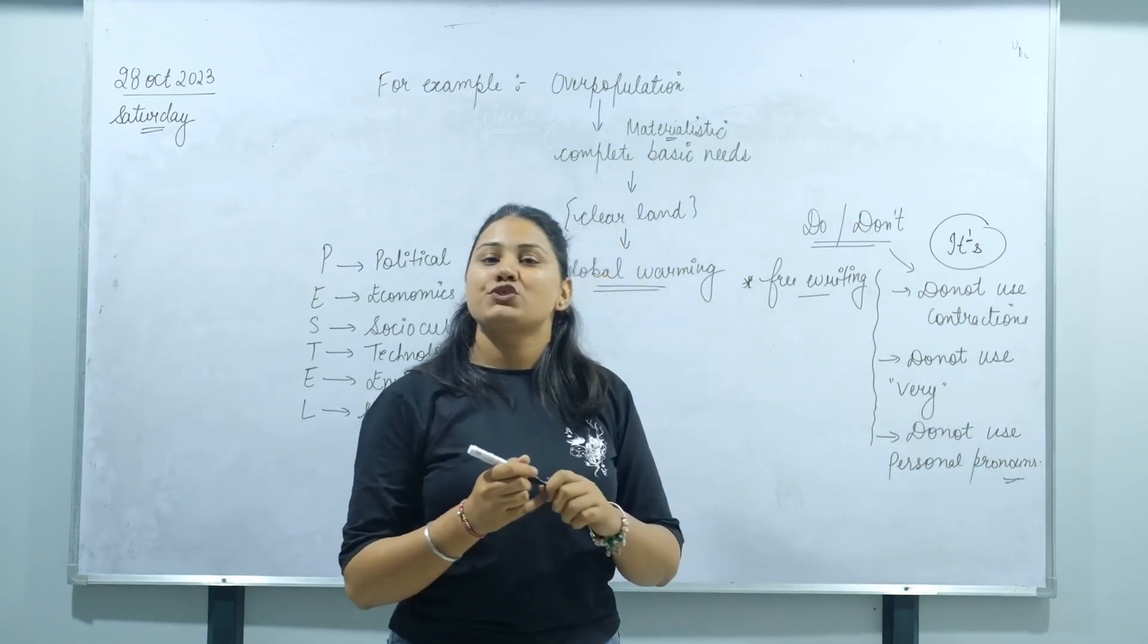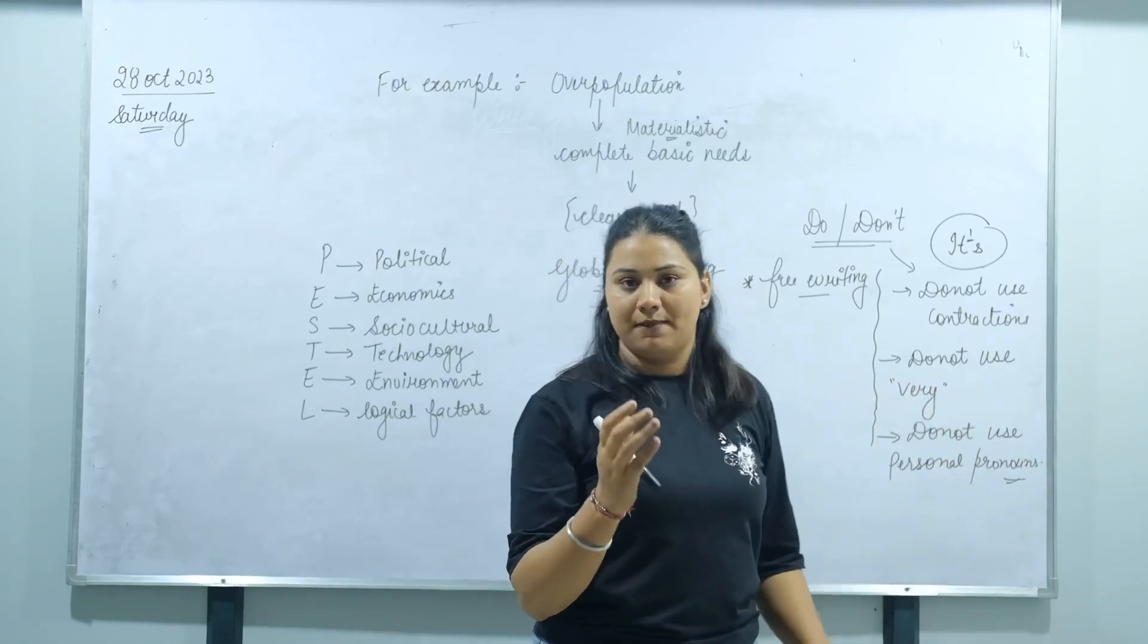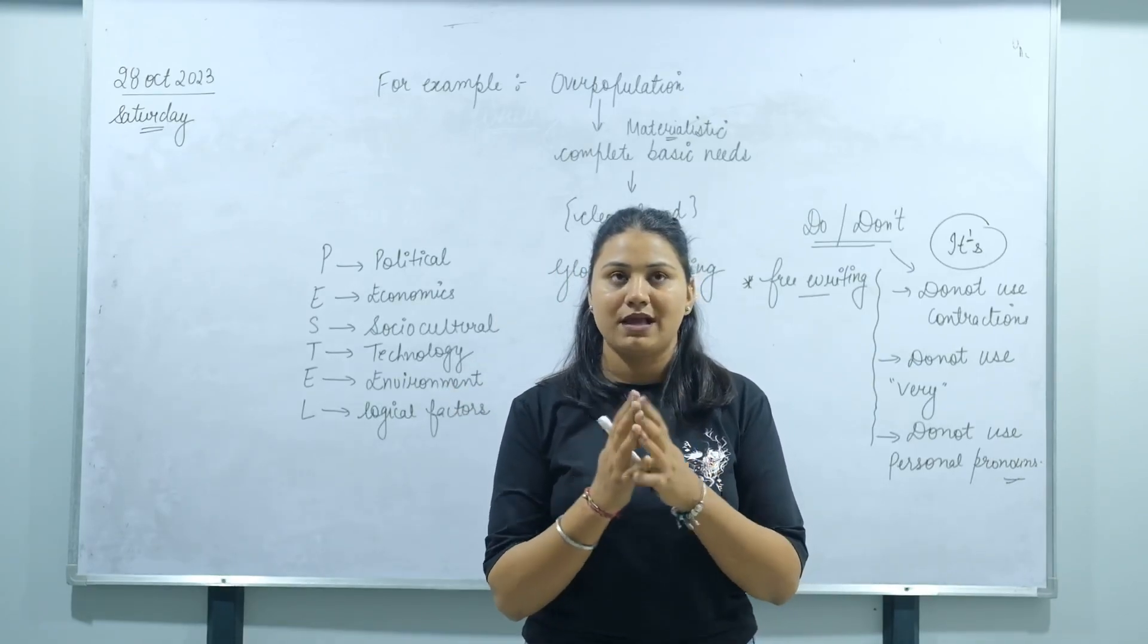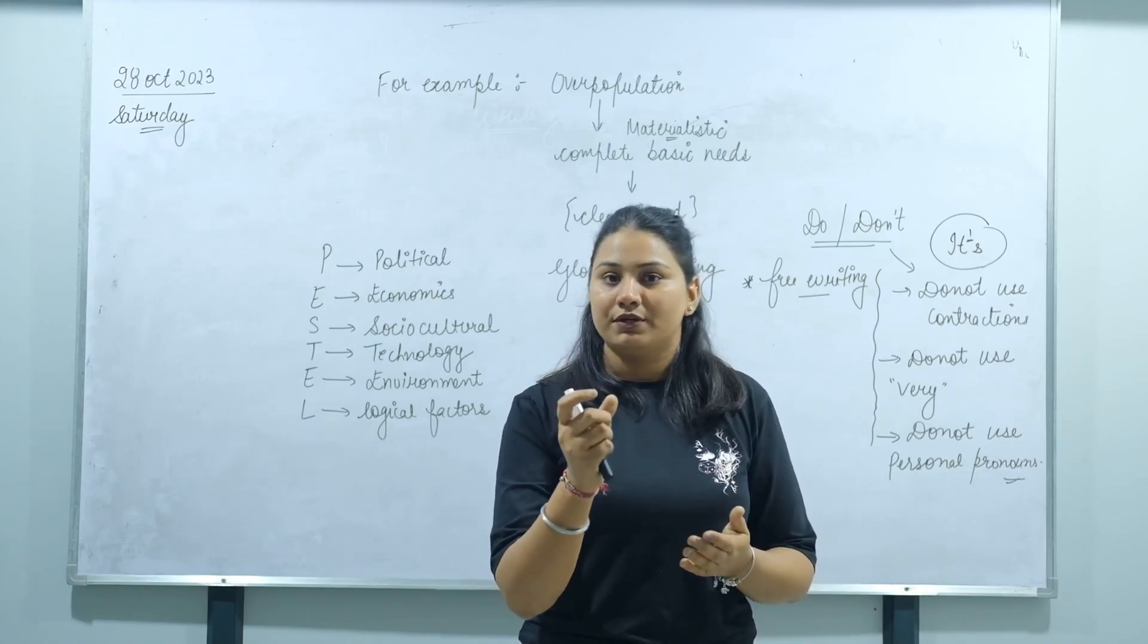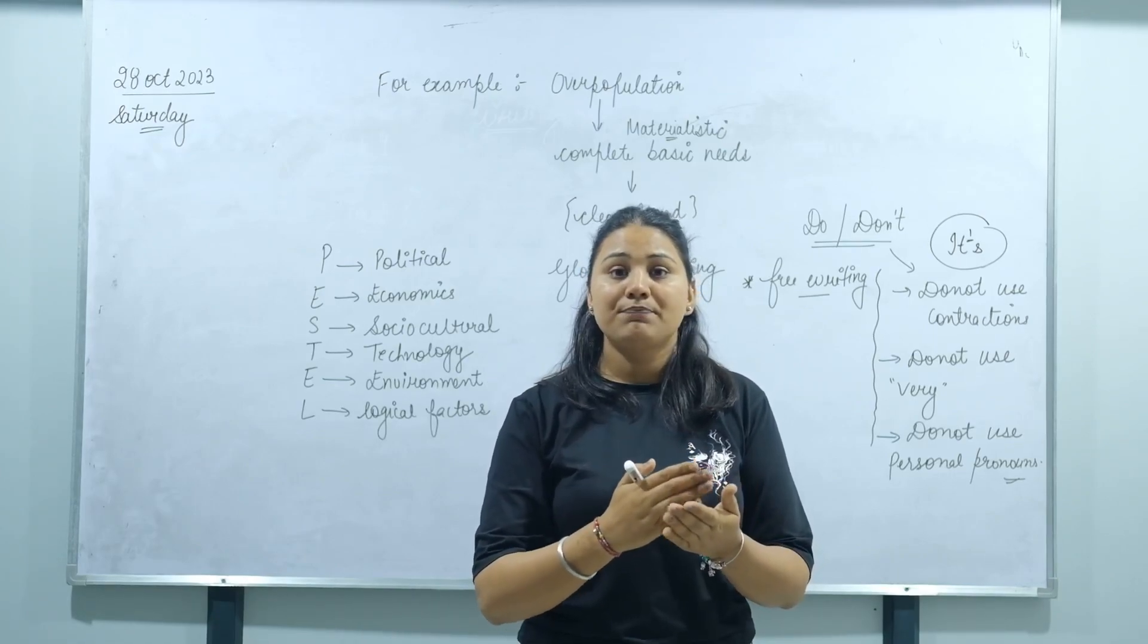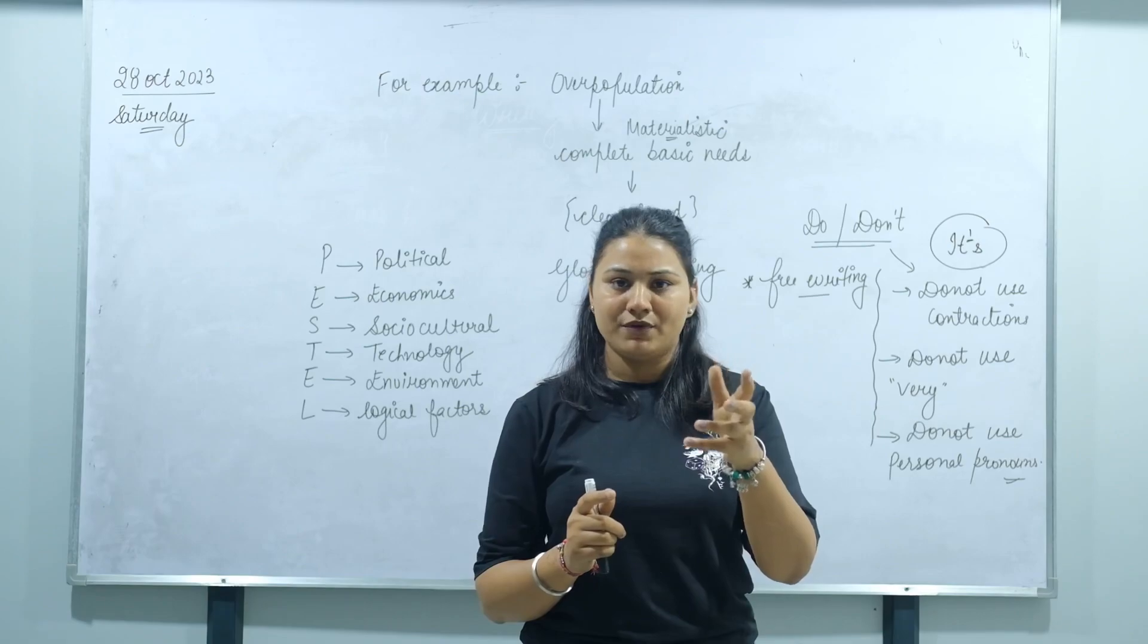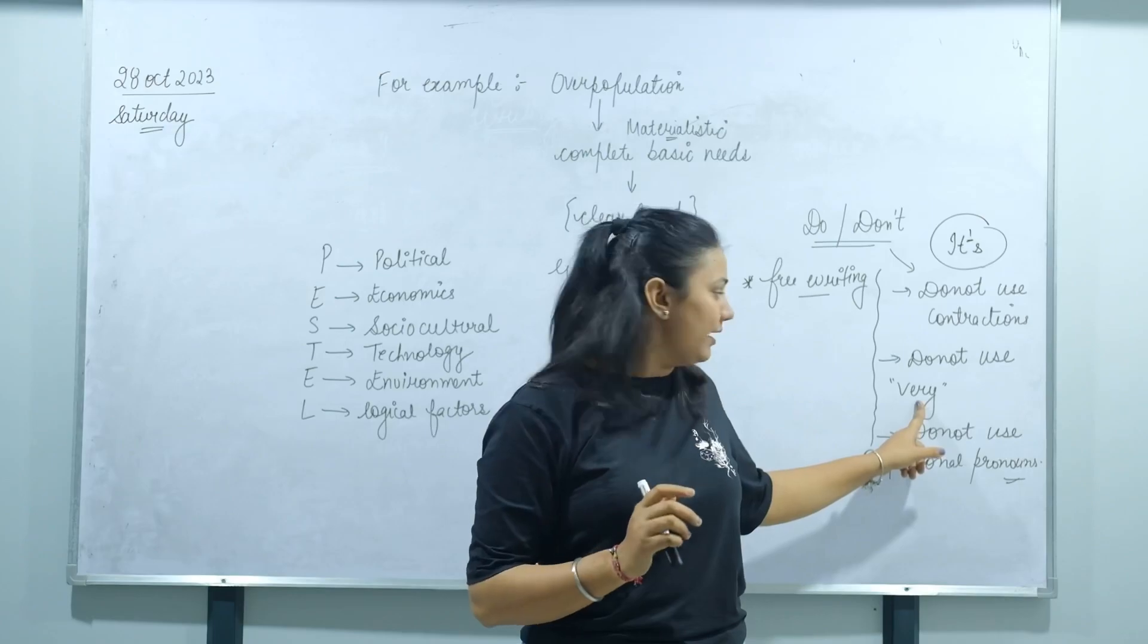The second common mistake is: do not use the word 'very'. For example, students start sentences saying 'education plays a very important role' or 'technology plays a very important role'. Instead, you can replace it with terms like mandatory or crucial. These types of words you can use, but don't use 'very' because it's too informal.